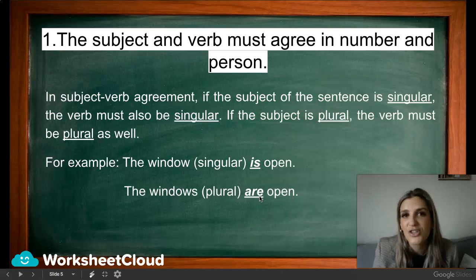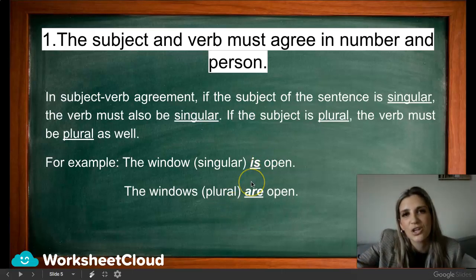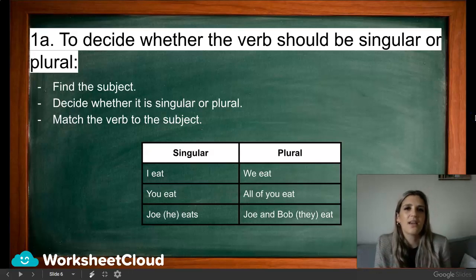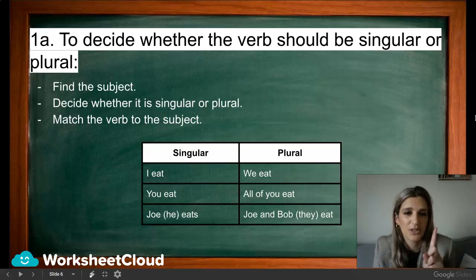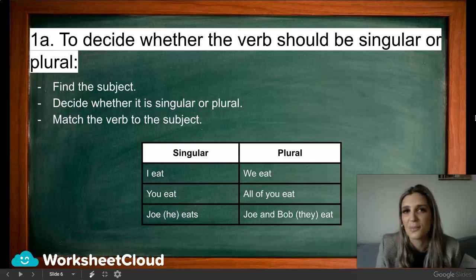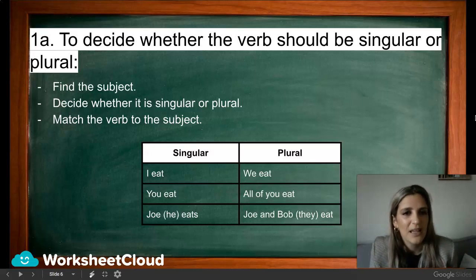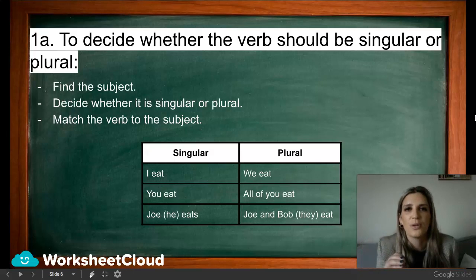They will give you an example that's wrong and you must change it, or they'll say give a reason for your answer. Most of the time they'll give you the incorrect sentence, or give you both — 'the window is/are' — and you must decide which one is correct. To decide whether the verb should be singular or plural, we always find the subject first, then decide if it's singular or plural, and match the verb to the subject.